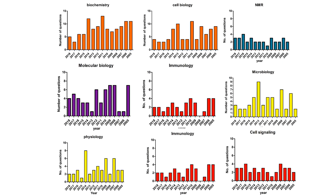I have a whole playlist for NMR, cell signaling, and immunology covering how to tackle those questions, because these topics are generally not well taught in courses and preparation for them is poor. One of your friends may not answer an NMR question but can answer a biochemistry question. You have to play the game differently — score in the uncommon topics that other people cannot score in, and that gives you an advantage.